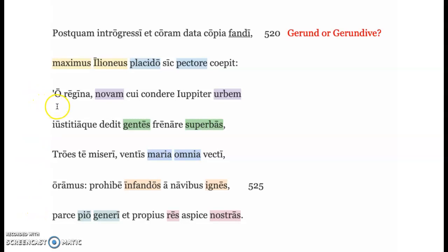Here he begins by flattering her. He says, O queen, to whom Jupiter, Jupiter being of course the king of the gods, gave the right to establish a new city and to check the proud kinds with justice. So he's saying, wow, Jupiter's given you this great power, you are a great queen.